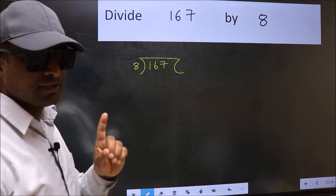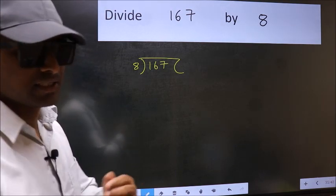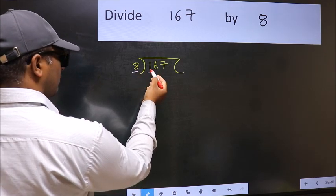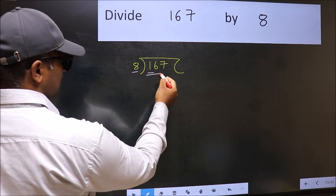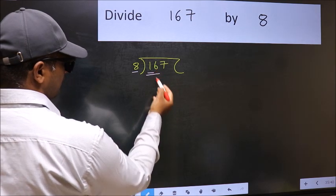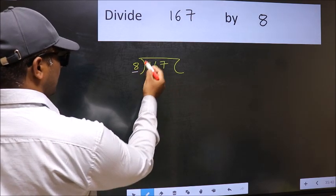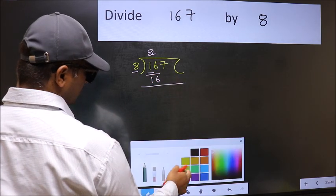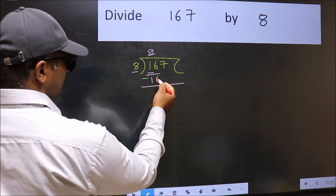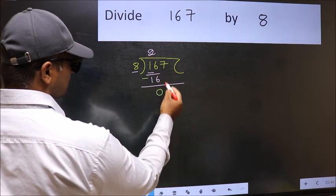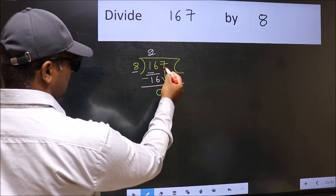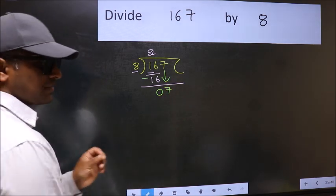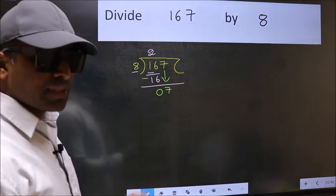Next, here we have 1 and here 8. 1 is smaller than 8, so we should take two numbers: 16. When do we get 16 in 8 table? 8 times 2 is 16. Now we should subtract 16 minus 16 equals 0. After this, bring down the beside number, so 7 down. After this step, the mistake happens.